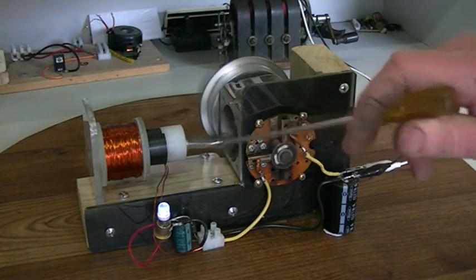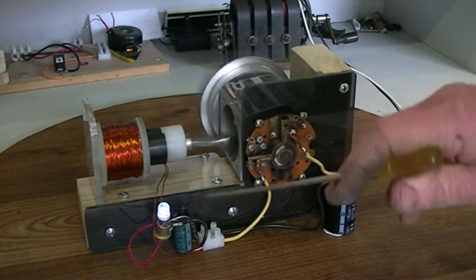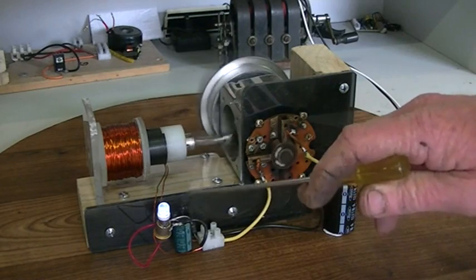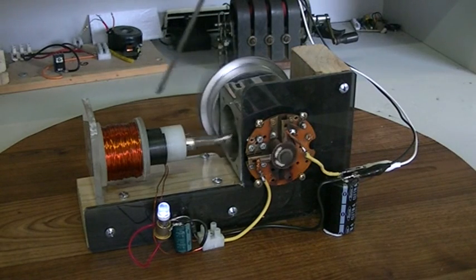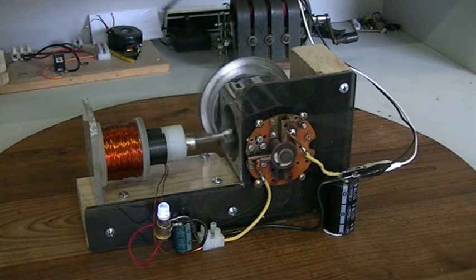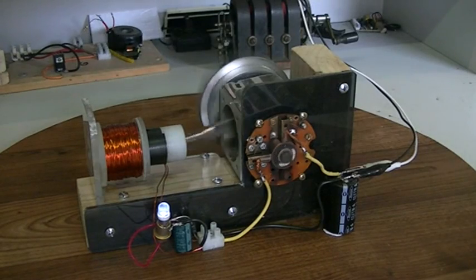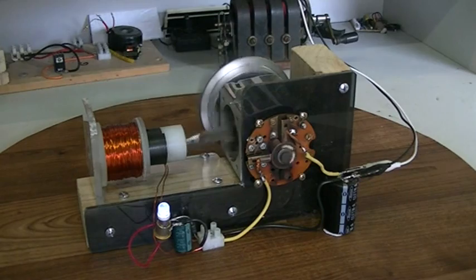When it is running in attraction mode - in repulsion mode we don't get much inductive kickback, and that would be due to the magnet trying to create a current flow that is opposite to the inductive kickback of the coil.